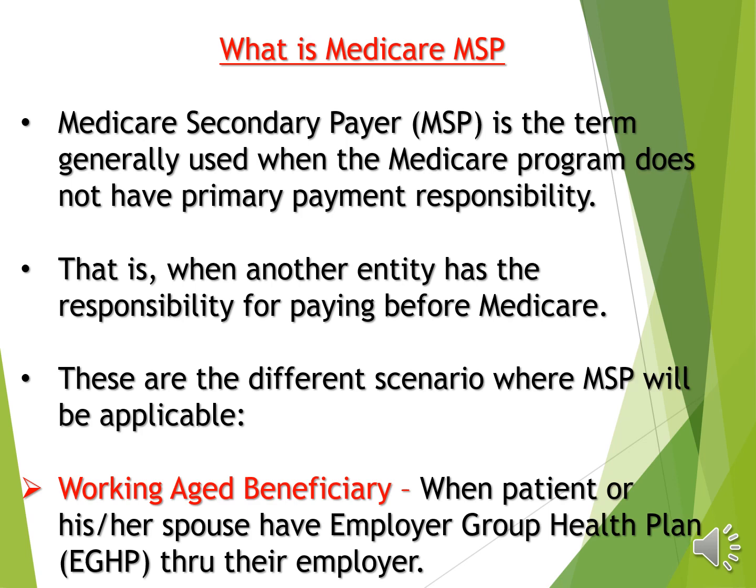First is Working Aged Beneficiary. When a patient or their spouse has an Employer Group Health Plan (EGHP) through their employer — Medicare patients are generally those who have reached retirement age and have no job. But if the patient or spouse is still working at a company and has received group health insurance, that group health insurance will be considered primary and Medicare will be secondary. Medicare will say you need to file the claims to your employer insurance first. If you have EGHP and you sent the primary claim to Medicare, it will be denied — EGHP must be filed first.